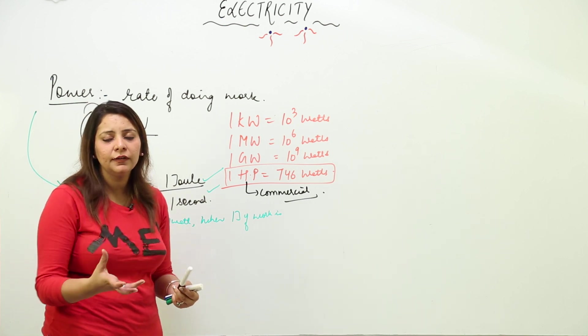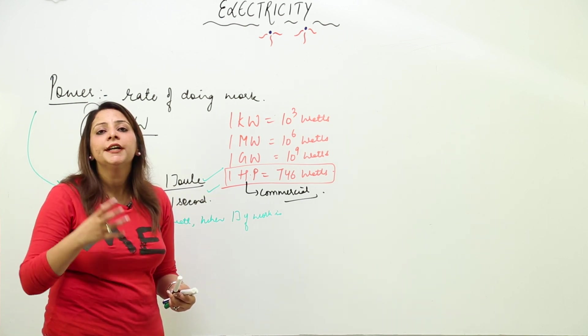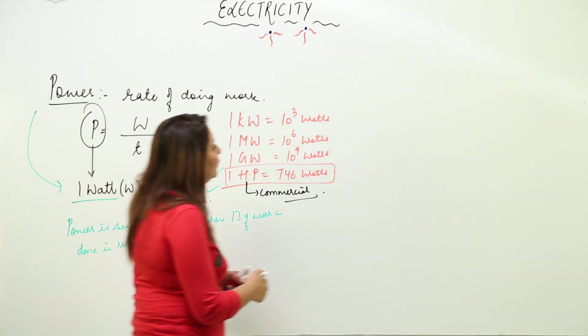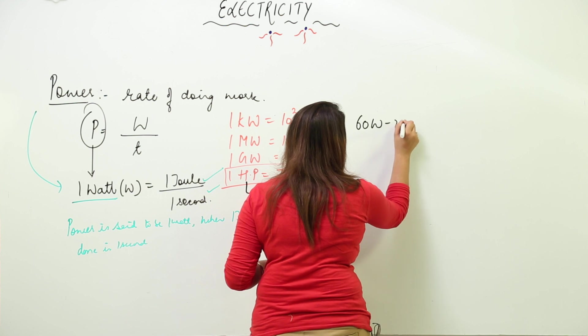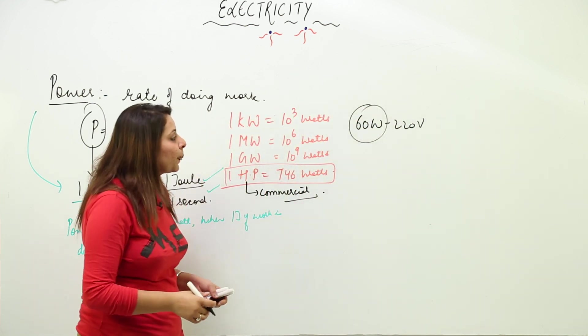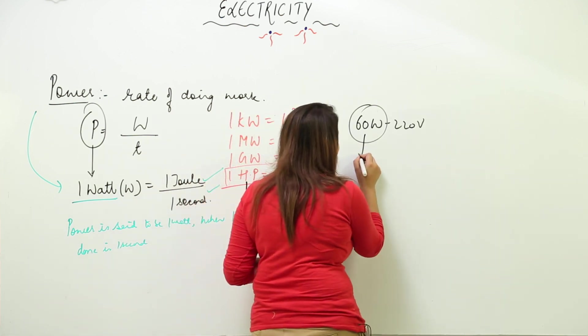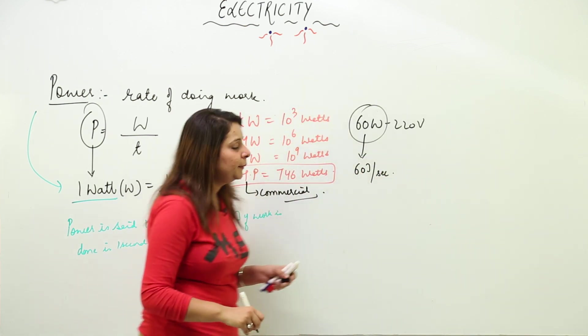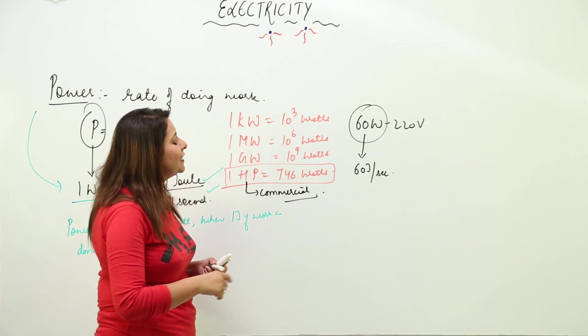Every appliance has a different power rating. If you bring a bulb written as 60 watt and 220 volt, this watt signifies it will consume this much energy in 1 second. 60 watt means it consumes 60 joules of energy in 1 second.